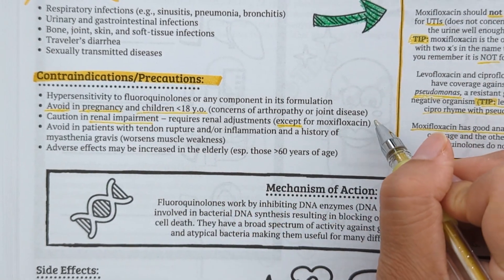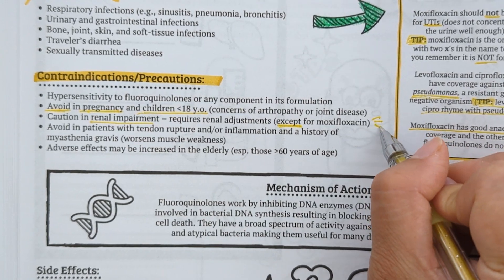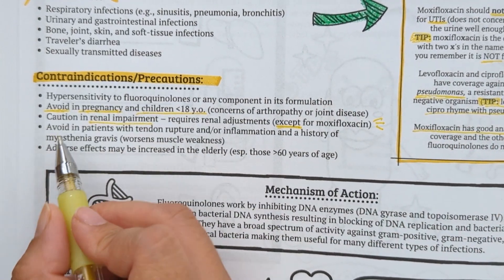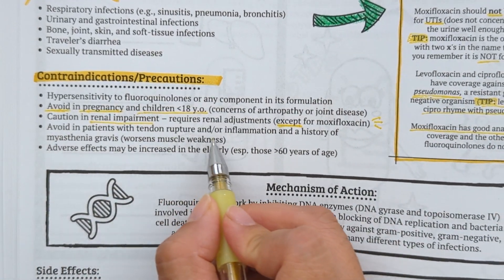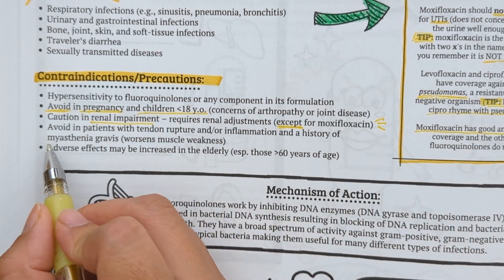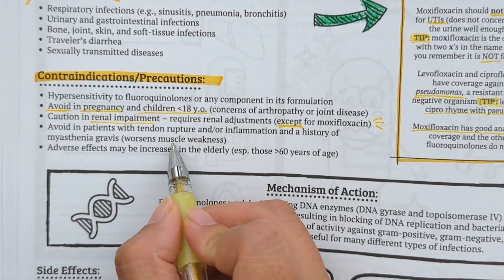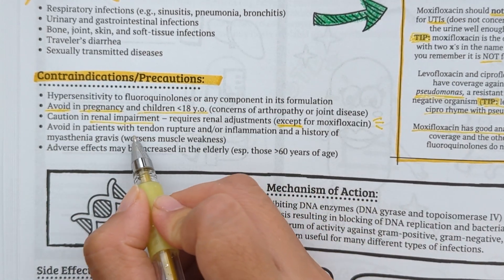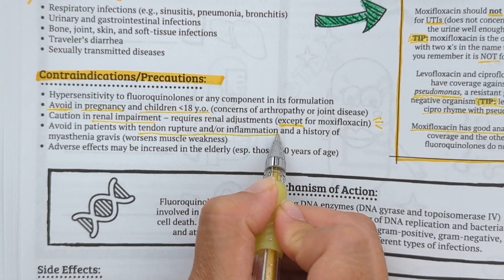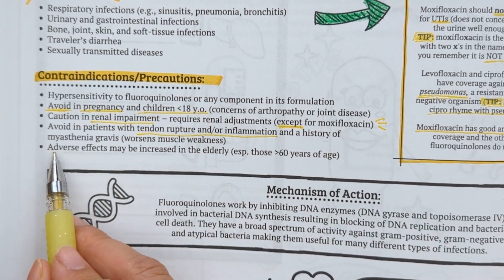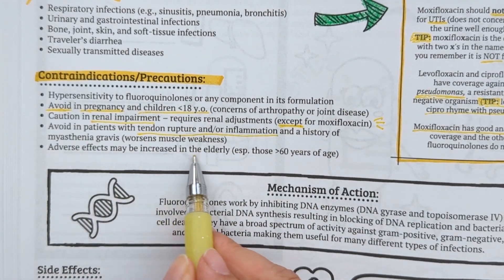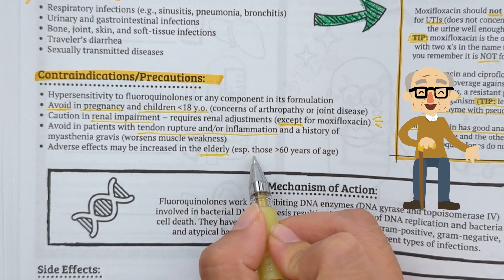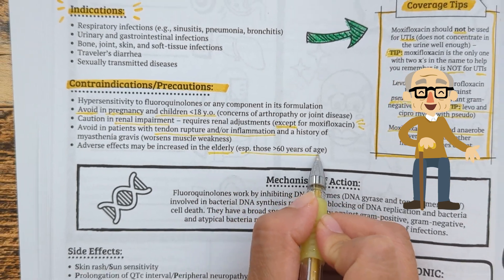Moxifloxacin doesn't have great concentration in the urine, which is why it should not be used for UTIs. You also want to avoid fluoroquinolones in patients with tendon rupture and/or inflammation, and in those with a history of myasthenia gravis due to the worsening of muscle weakness. Be cautious in elderly patients as there is an increased risk of side effects.